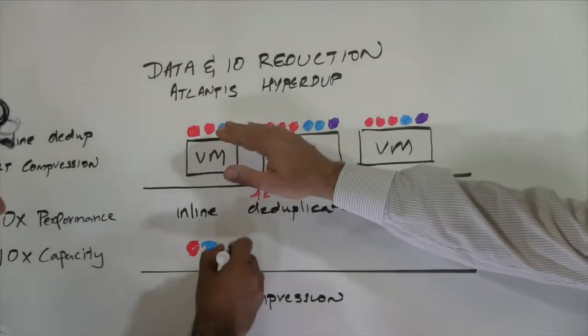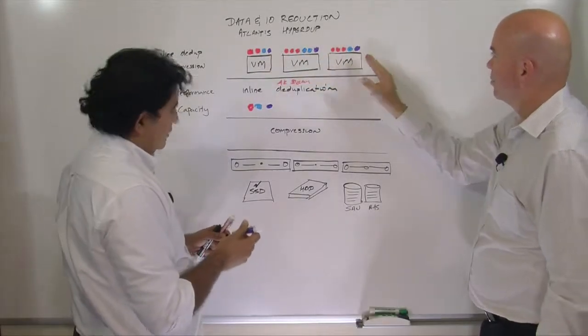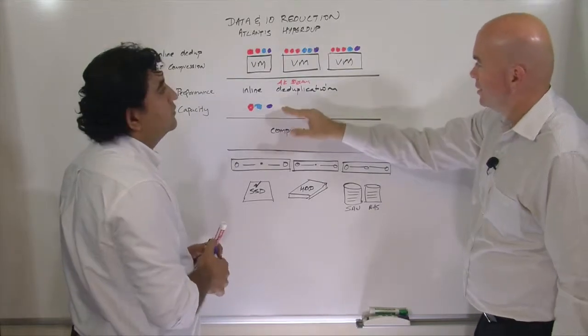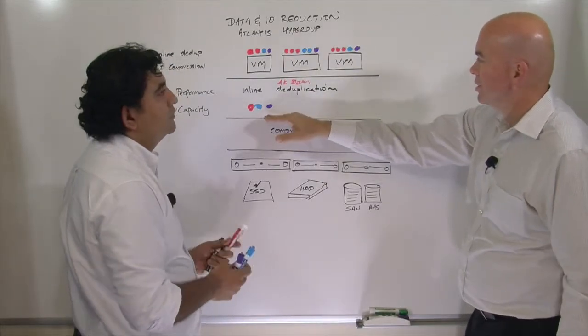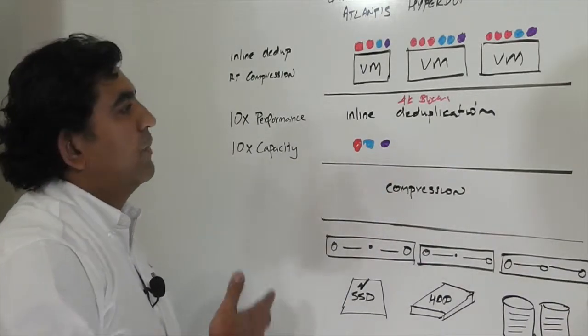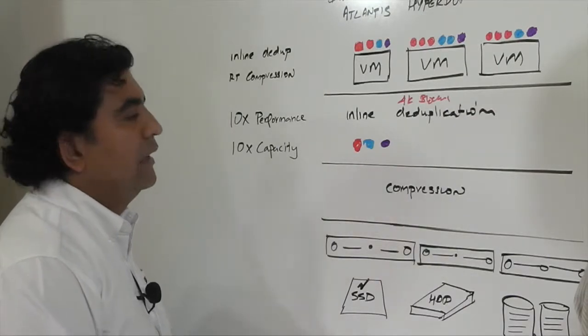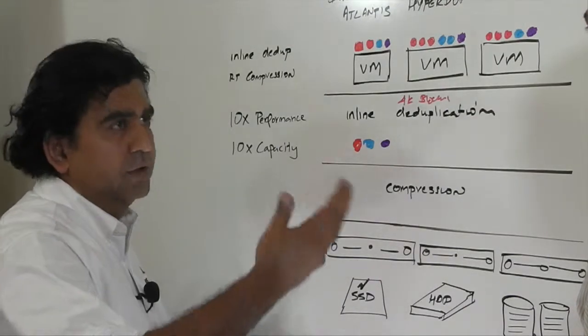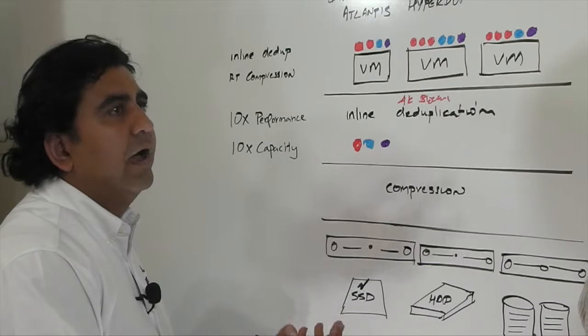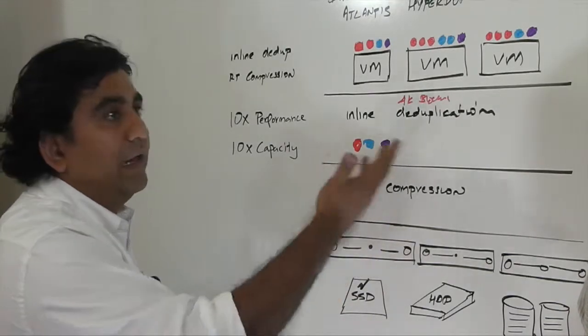So essentially what's happening here is these red dots are redundant data, the blue dots are redundant data, and the purple dots are redundant data, and then you've deduplicated them or single instanced them down to a single block each. And you get a reduction anywhere from 80 to 95 percent depending on the type of data. In very heterogeneous workloads such as VDI, Test and Dev, VMs where the VMs practically look identical, that can be about 95 percent.